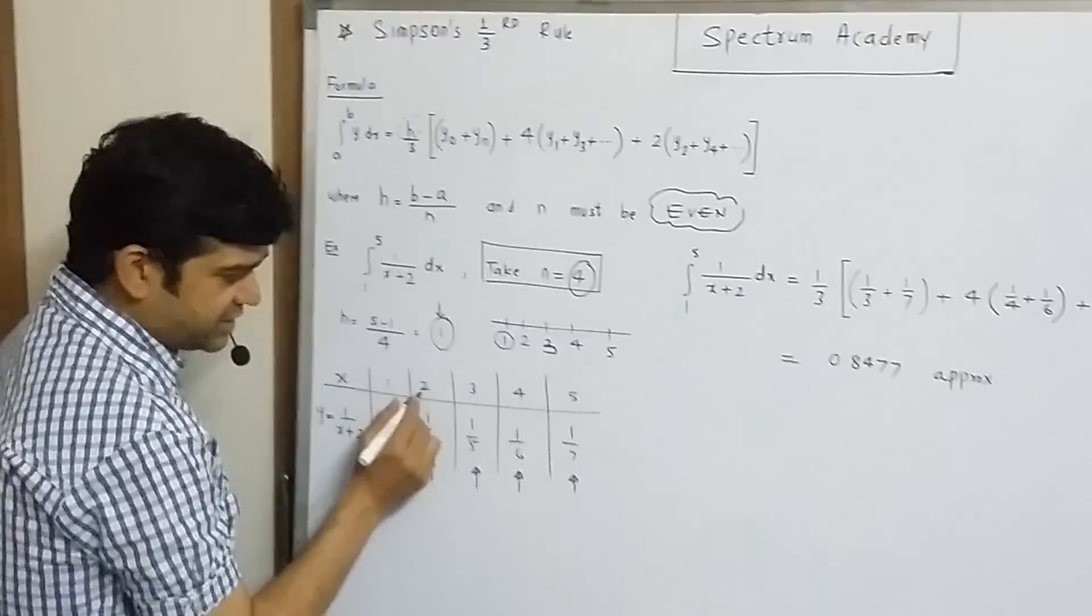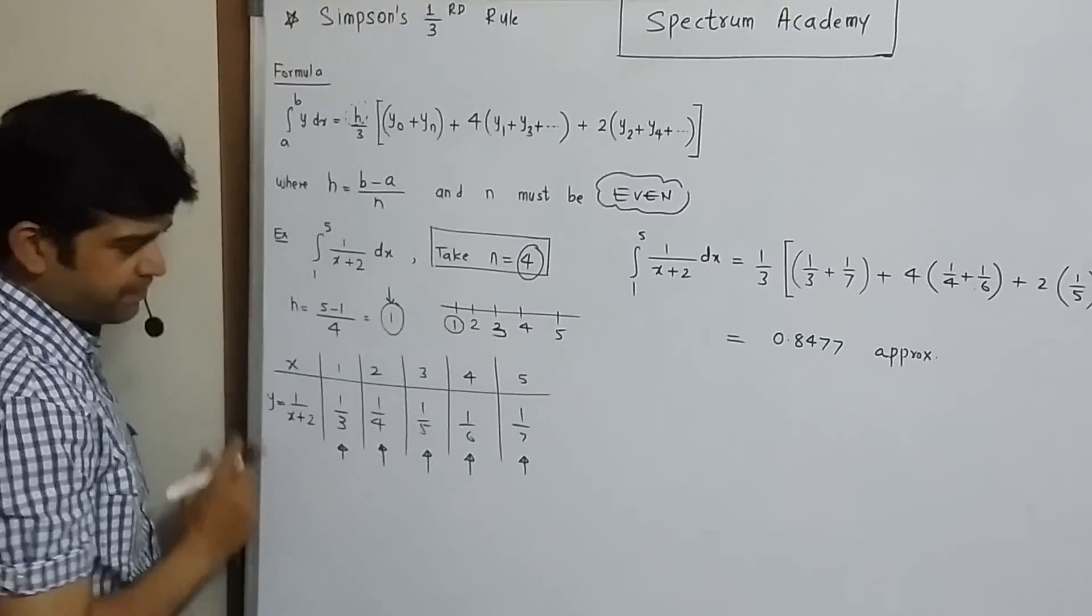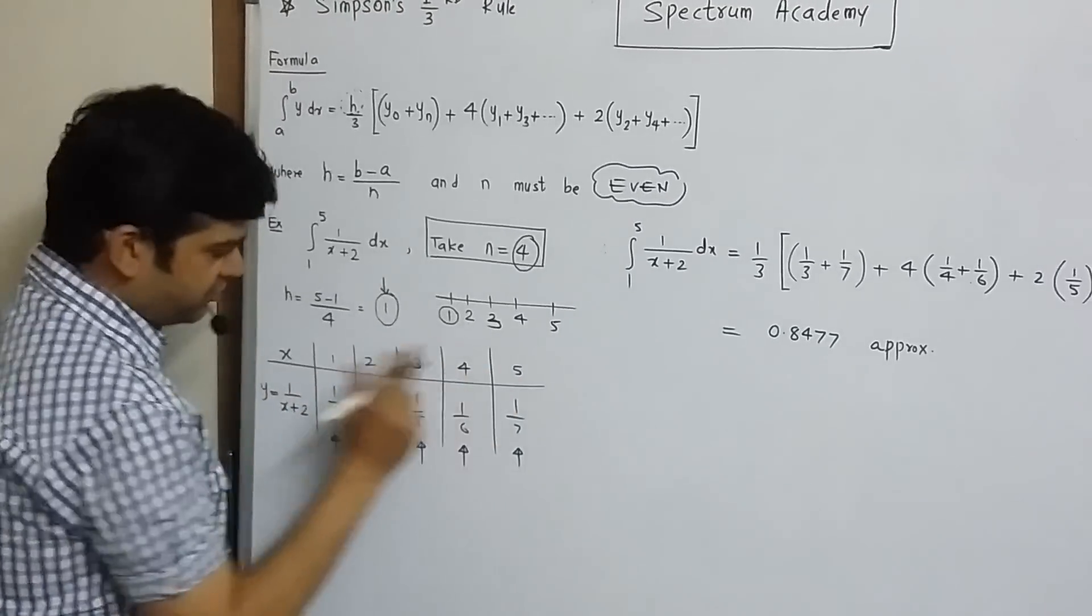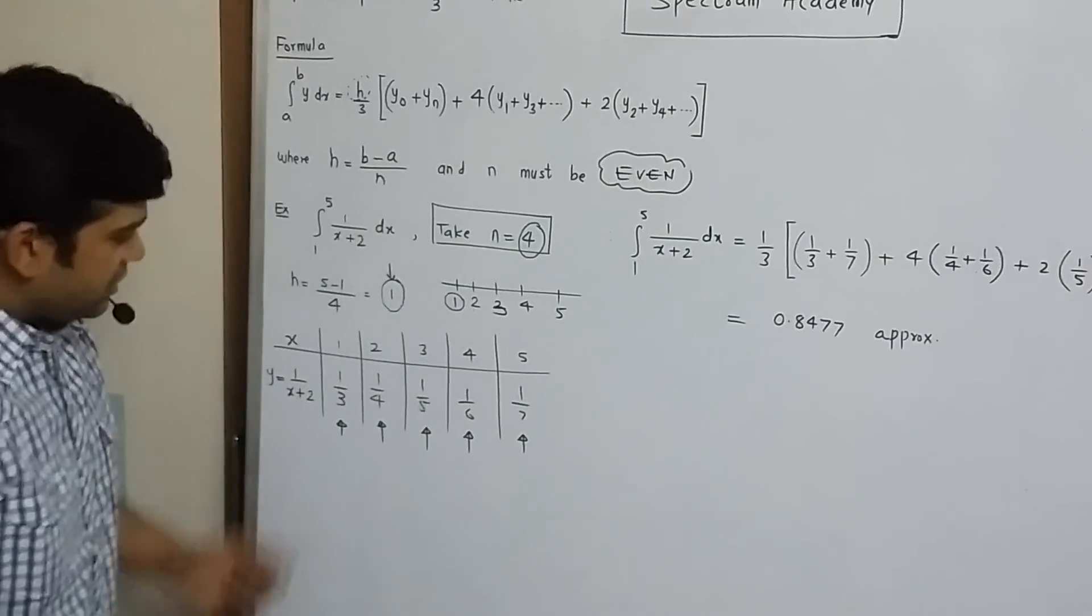Similarly, when x value is 2, y value will be 1 upon 2 plus 2. That is 1 by 4. Each value of x will give you corresponding value of y.